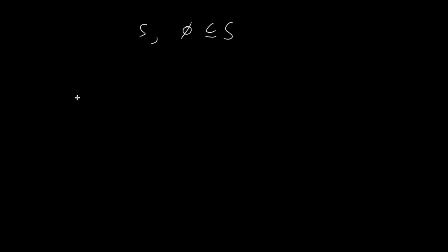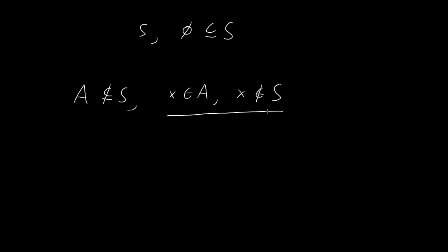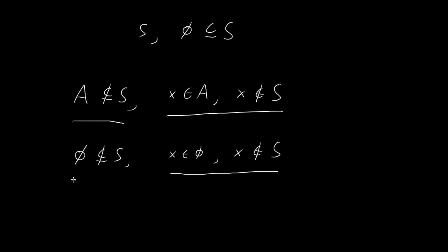If we have a set A, and we want to show that A is not a subset of S, then we must find some object x where x is an element of A and x is not an element of S. So if we can demonstrate this, then we can conclude that A is not a subset of S. So if it turns out that the empty set is not a subset of S, then it must be the case that we can find an object x where x is an element of the empty set and x is not an element of S, and then we could conclude that the empty set is not a subset of S.